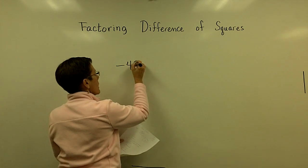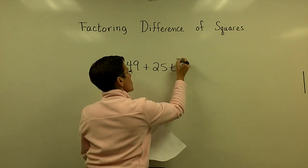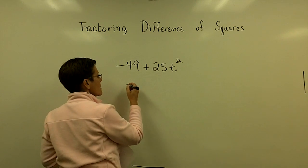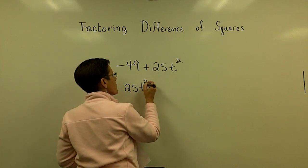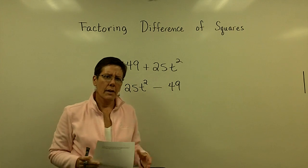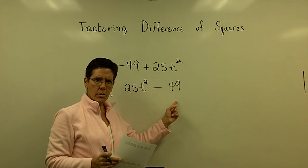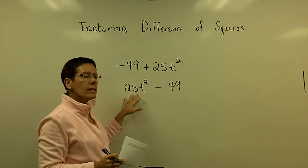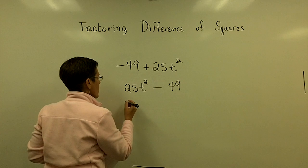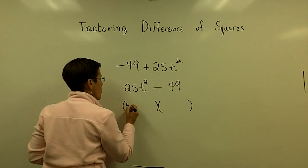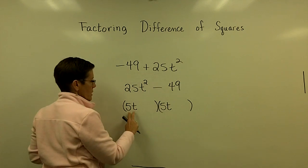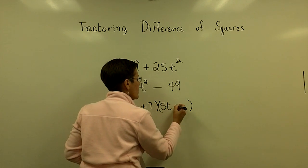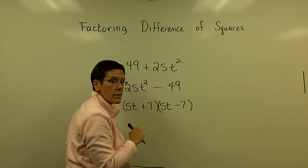Let's factor negative 49 plus 25t squared. It's nicer to rewrite it as 25t squared minus 49. Now we have two terms with a minus sign in the middle — difference of squares. The square root of 49 is 7 and the square root of 25 is 5. So I write the factored form with 5t as the first term, since 5t times 5t is 25t squared. Because of the minus 49, I put a plus 7 in one binomial and a minus 7 in the other — the order doesn't matter.